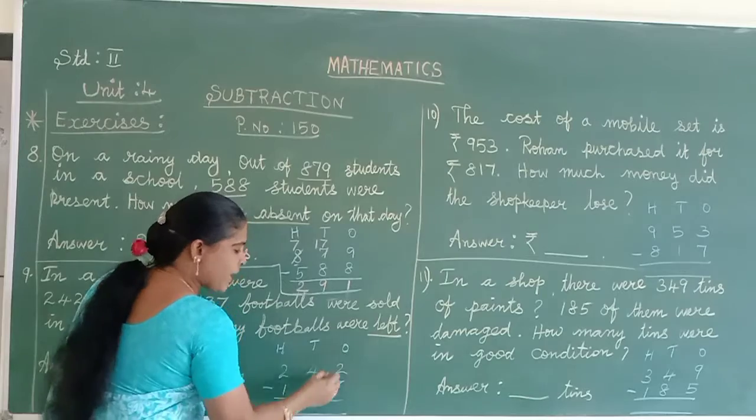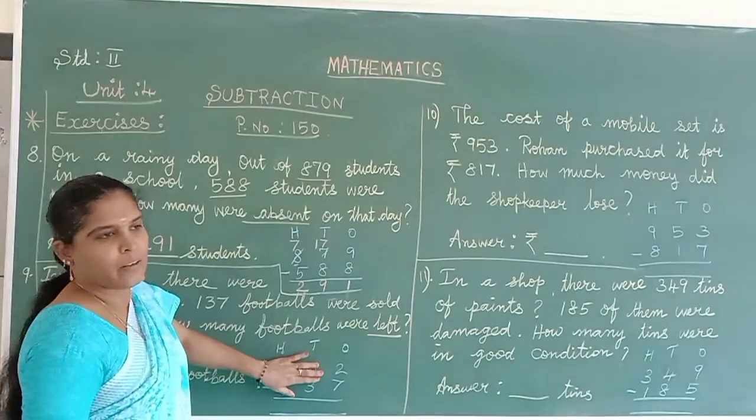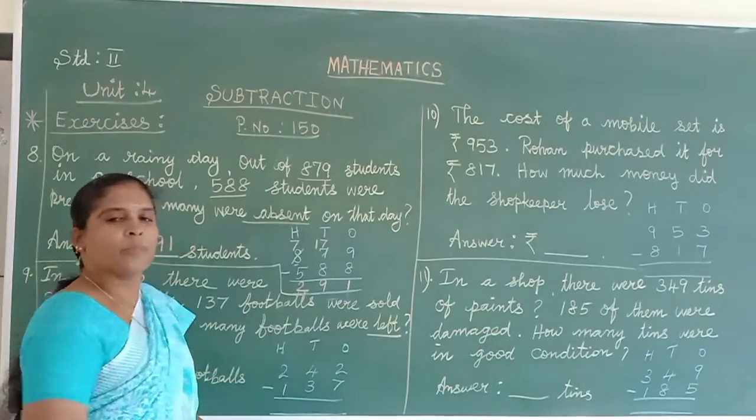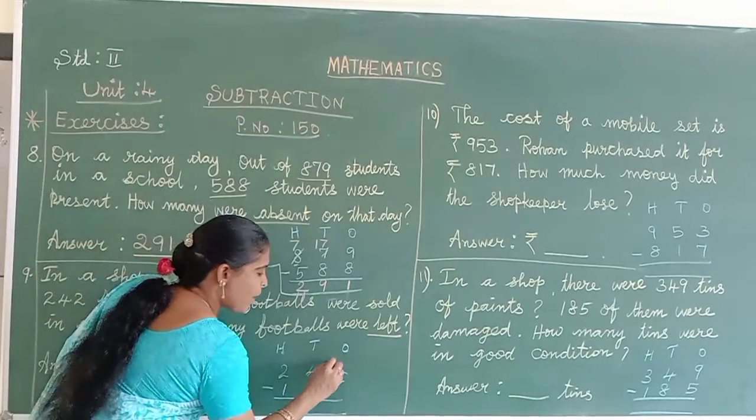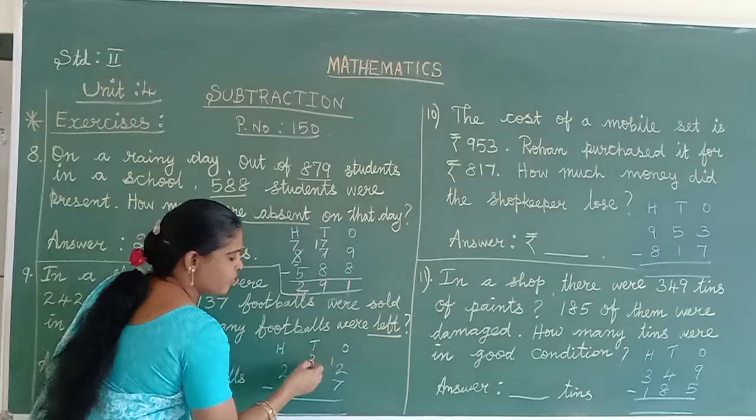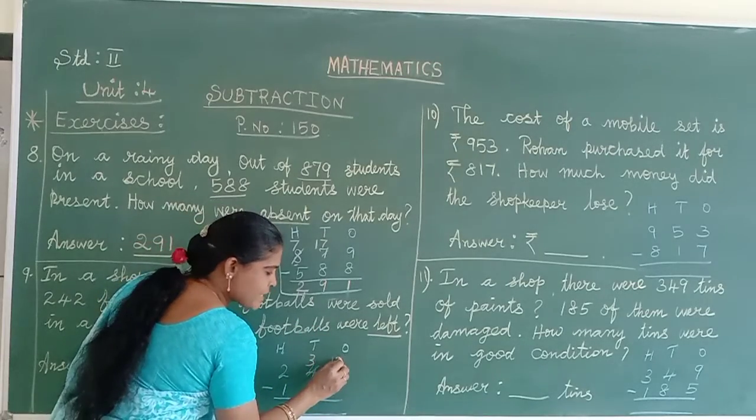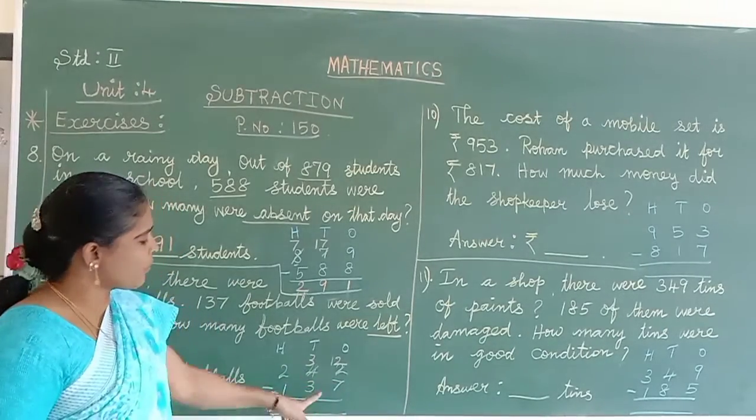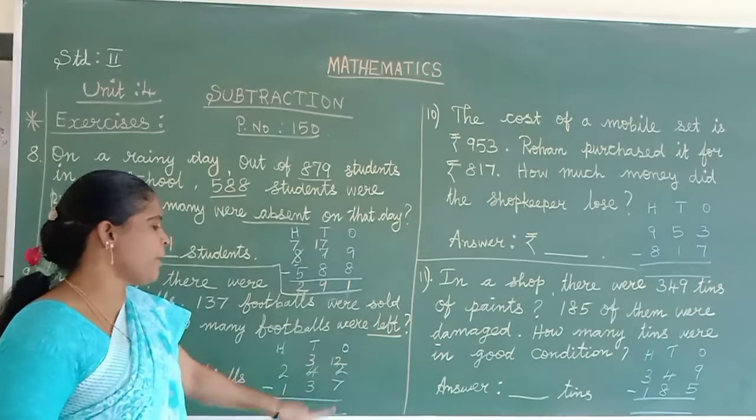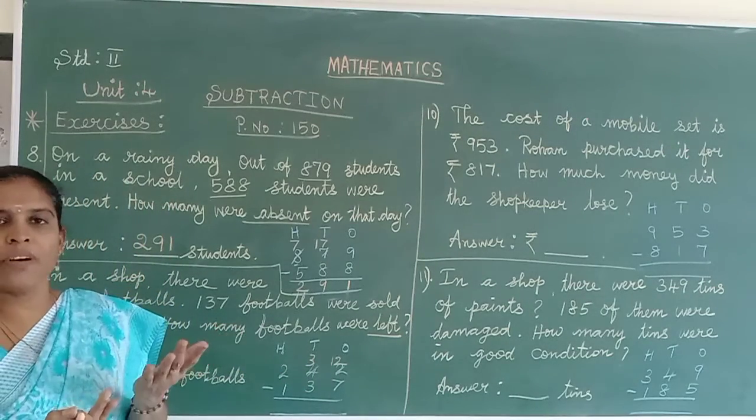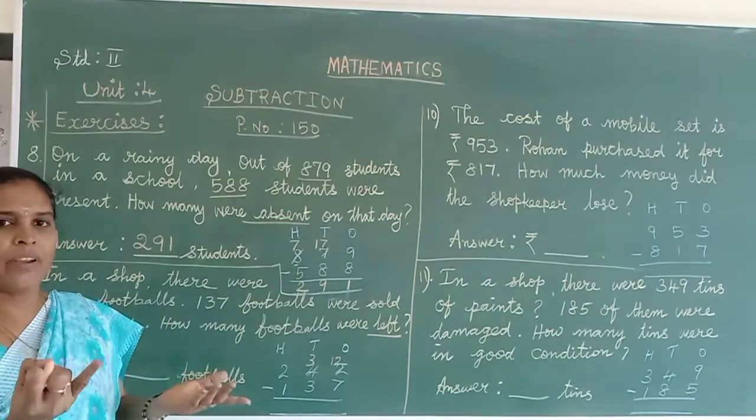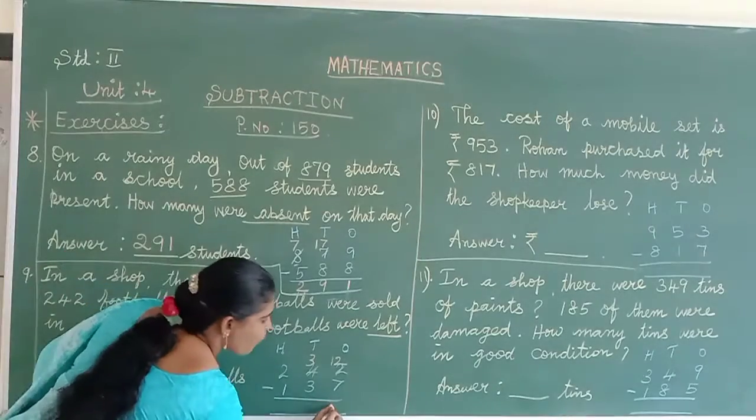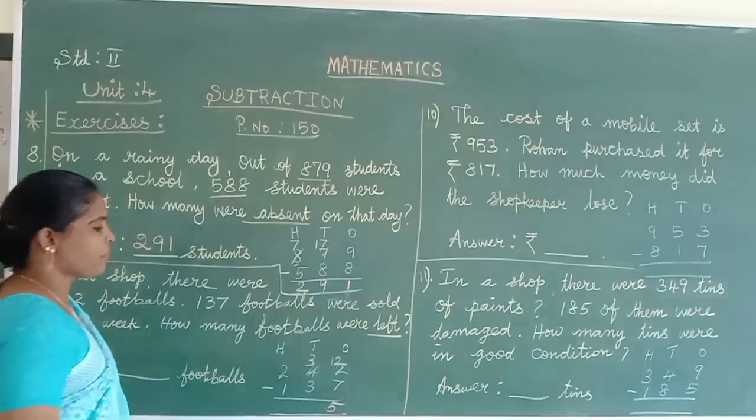Ones column, tens column, hundreds column. 242 total footballs, 137 sold in the week. Rest of the footballs, how many in the shop we should find. Come to ones column, check the numbers. 2 and 7. 2 is smaller than 7, smaller number on top, so do the borrowing. Take 1 from this number. 4 minus 1 equals 3. Cross it and write there. 12 minus 7. Now we have 12. Can we do more? Yes. 12 minus 7, 12 in the mind, 7 on your finger. 12, 11, 10, 9, 8, 7, 6, 5. We repeat the tens column.